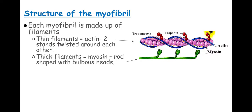In this image we have actin and myosin. Myosin is a thick filament and it has these bulbous heads, and these heads form a cross-bridge with the actin. In this particular image, the tropomyosin on the actin is blocking those binding sites, but we'll look at that again shortly.